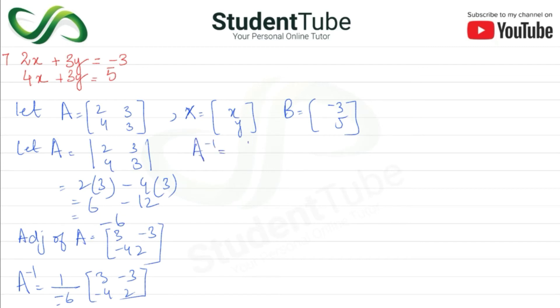So A inverse 1 is equal to 1 upon 6 or minus 3 minus 2, 3 or 4. Okay? Now X is equal to A inverse 1 multiplied by B.